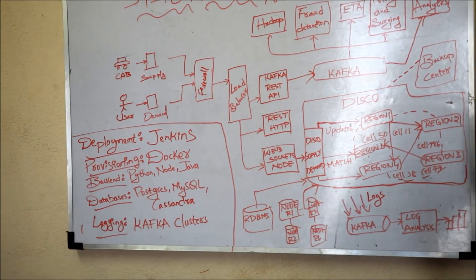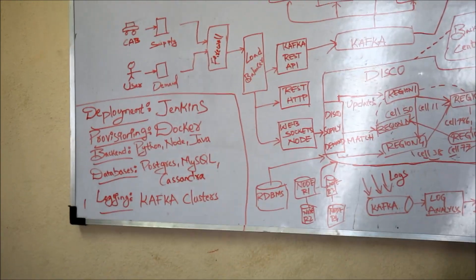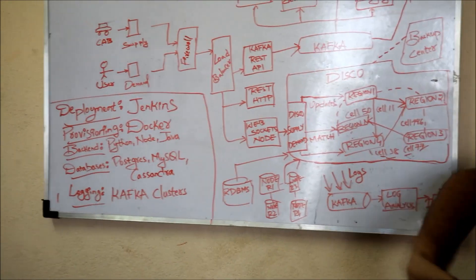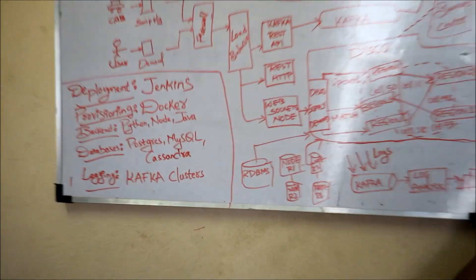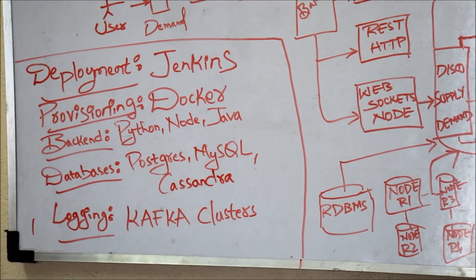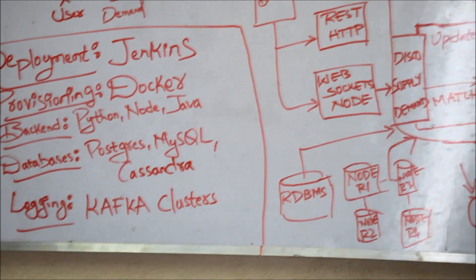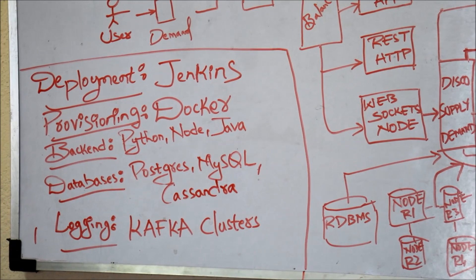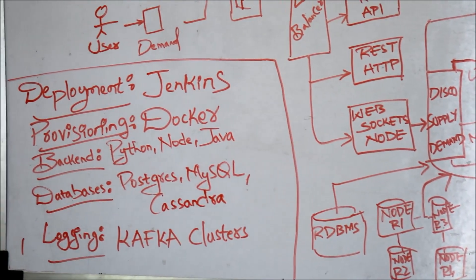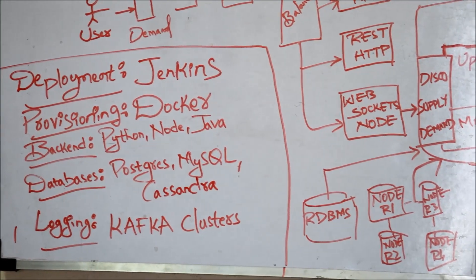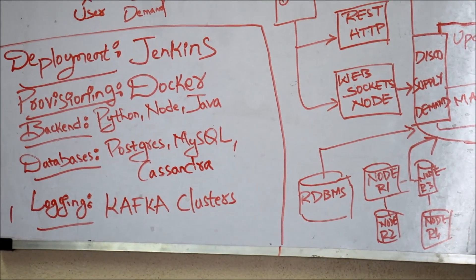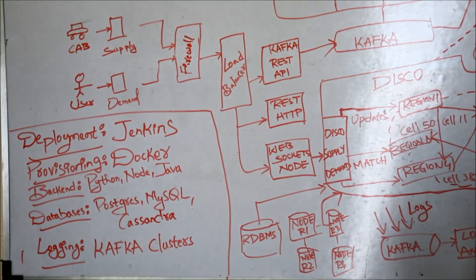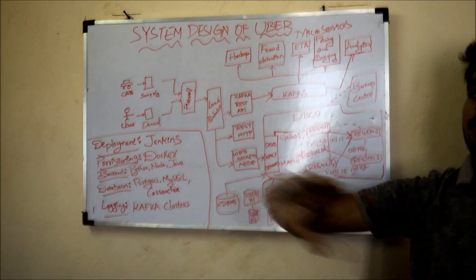When it comes to databases, Uber initially used PostgreSQL, then transitioned to MySQL, and now uses Cassandra to livestream big data. For logging, it uses Kafka clusters. Kafka essentially manages and rules the Uber ecosystem — Uber gains its profits because of Kafka. Without Kafka and data analysis, it would be very difficult for Uber to enter the profit zone.